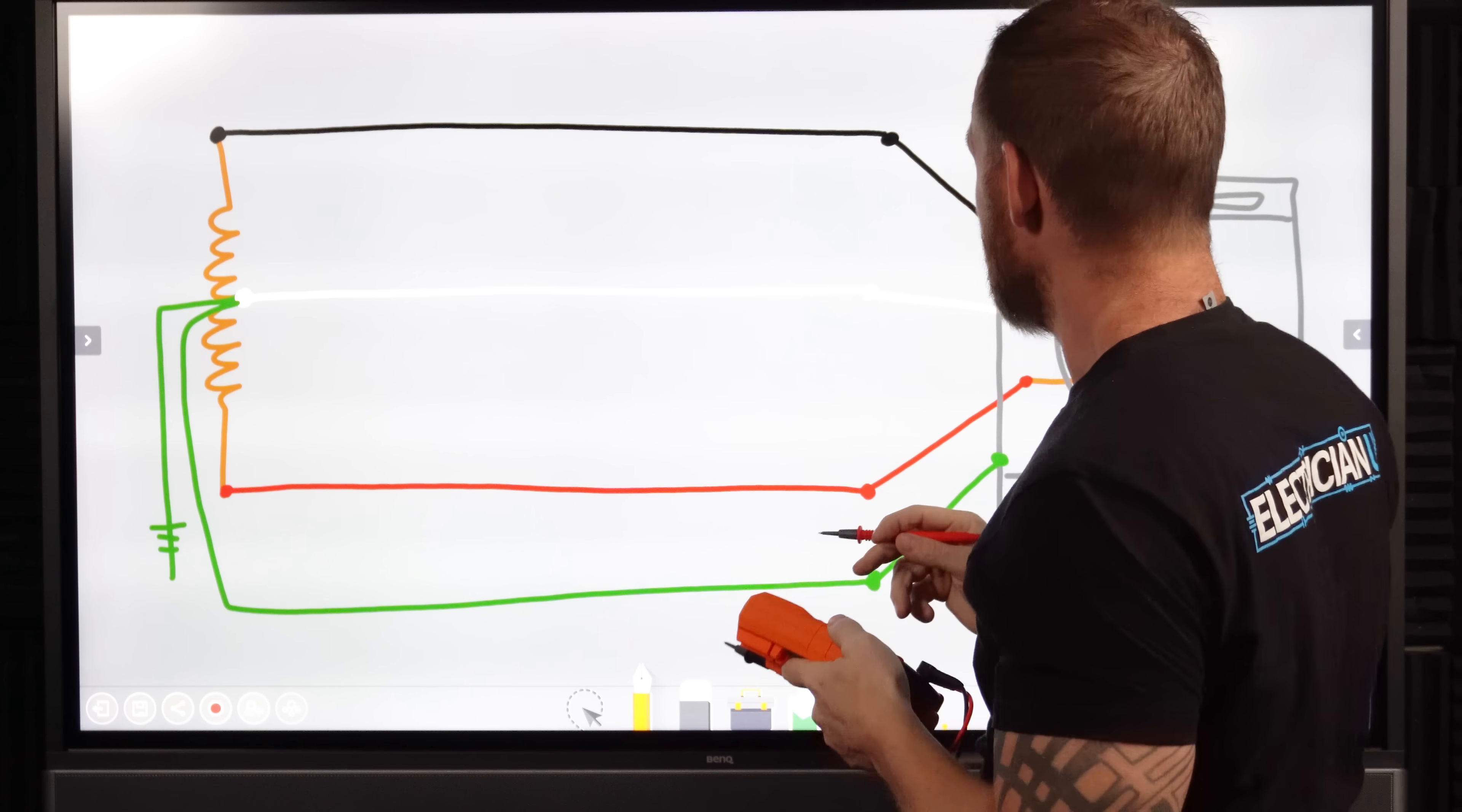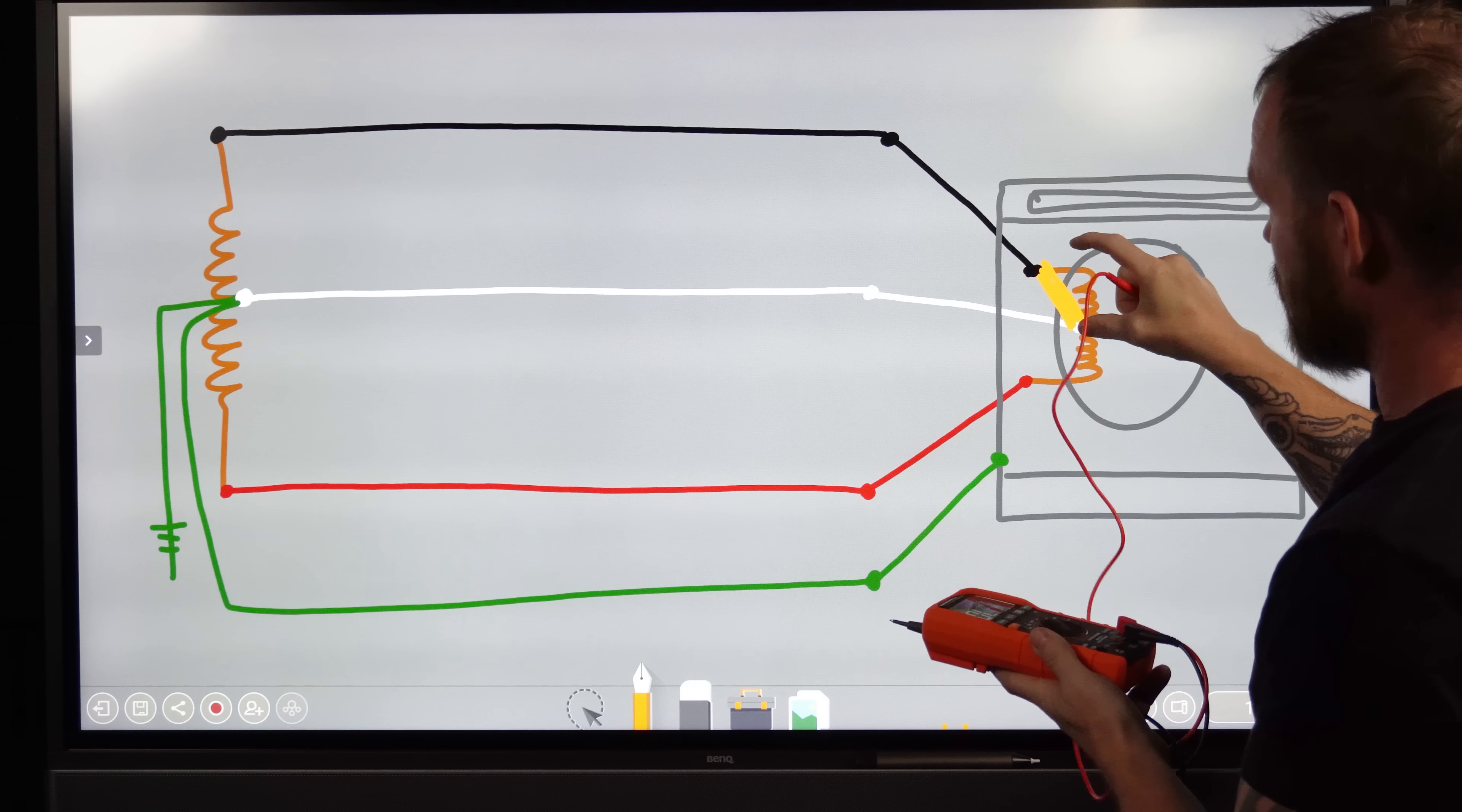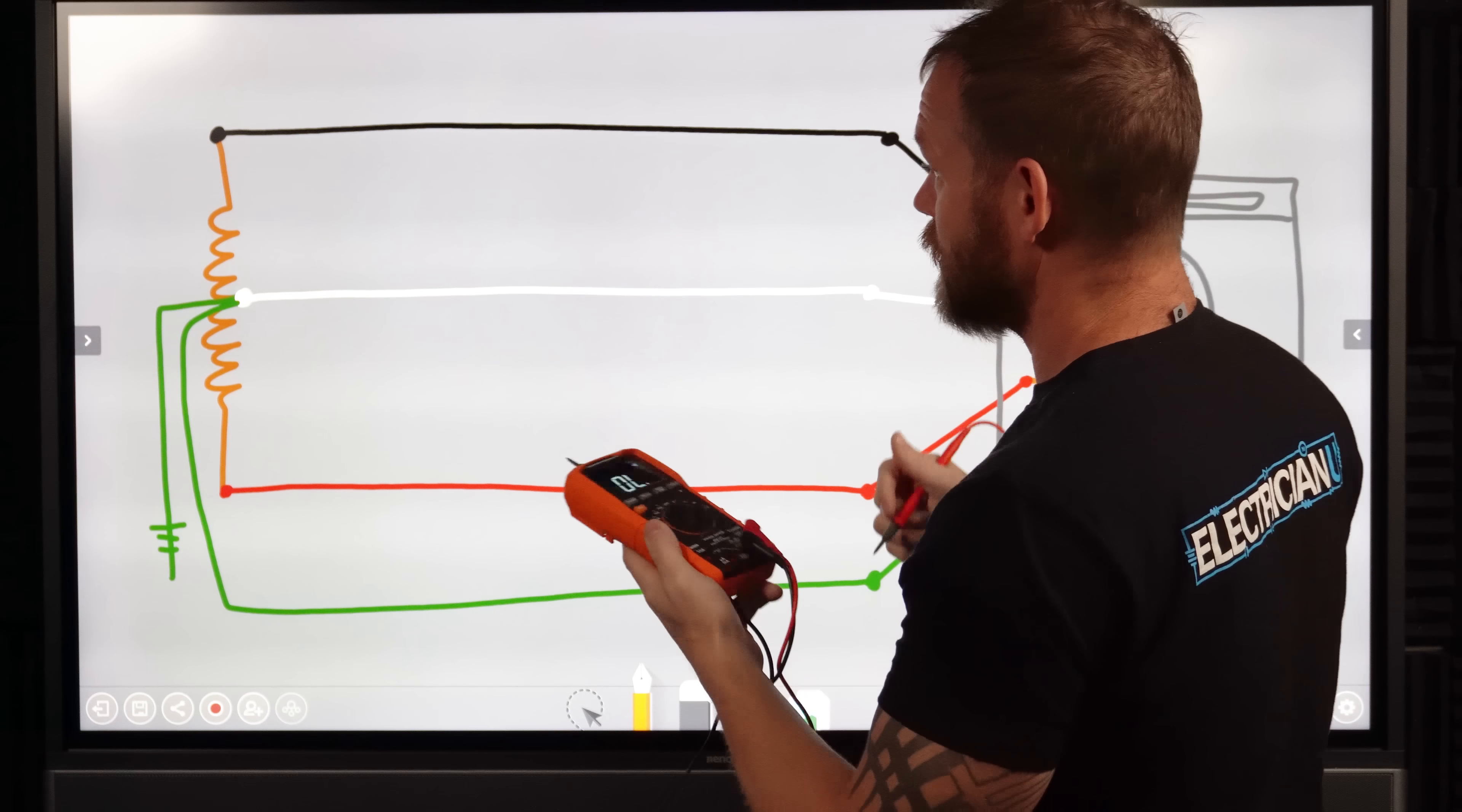You can do the same thing on the hots to check the two hots. If there's continuity between them, there shouldn't be continuity again until the load is connected going through that element. Because once you energize a load, this whole element here, this coil of wire connects to both of these. And that's what allows the motor to start working. So in that moment, while it is working, you do have a complete circuit and there is going to be continuity. But when the load is not connected, you're not going to have continuity.